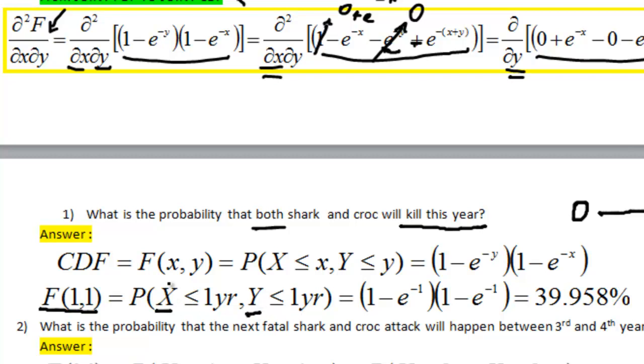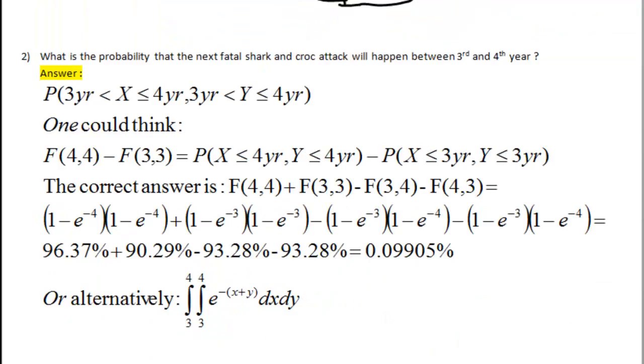So x variable was croc and y variable was shark. So the probability that shark and croc will attack in less than 1 or equal to 1 year. So here, I've taken my CDF, which was this one, and all I've done is replaced x and y with 1, because we are trying to find out the probabilities associated with the attack in the first year. So this is what we get. It's around 40%.